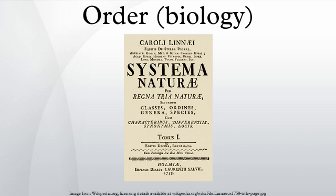In biological classification, the order is a taxonomic rank used in the classification of organisms and recognized by the nomenclature codes. Other well-known ranks are life, domain, kingdom, phylum, class, family, genus, and species, with order fitting in between class and family.